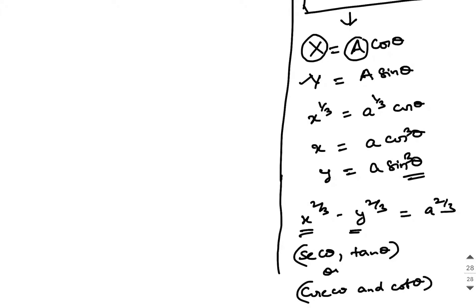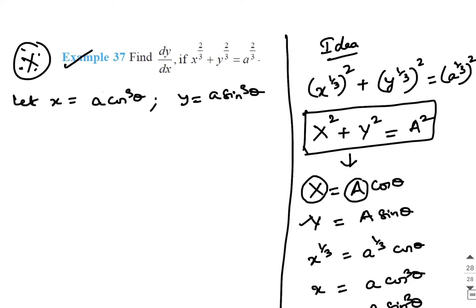Because secant square theta minus tan square theta will be 1, similarly cosecant square theta minus cot square theta will be 1, that is when you have a minus sign here, but here since the question is having a plus sign, I am taking sin and cos.